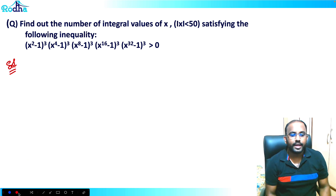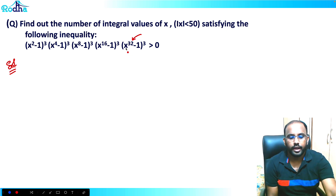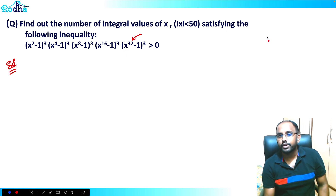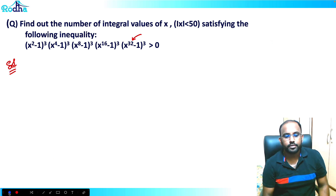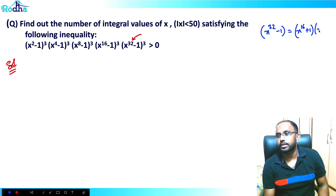First of all, we attack the higher powers. We attack all the higher powers. For example, we have x raised to 32 minus 1. Now how can we solve it? We can write x raised to 16 plus 1 into x raised to 16 minus 1.